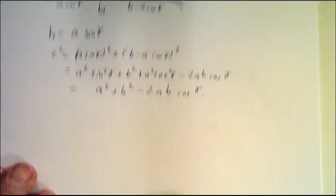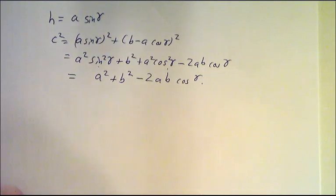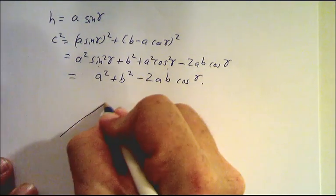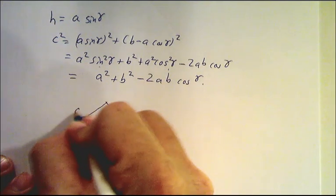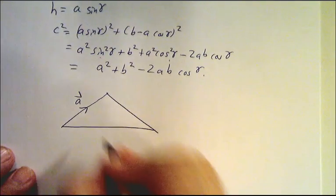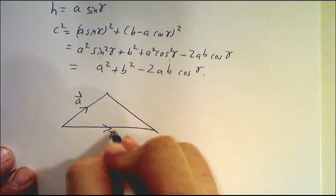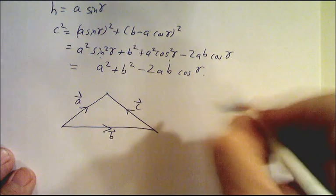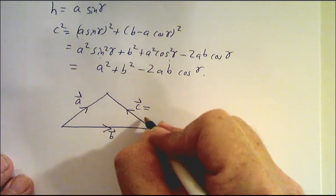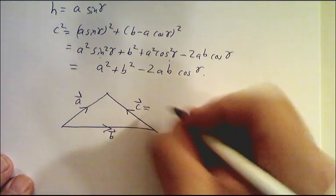Now we can get the same thing with vectors even more easily. Let me draw the triangle again. Only now let's draw the vector here as vector A, and this is the vector B, and this is the vector C. But as a vector, C is A minus B.